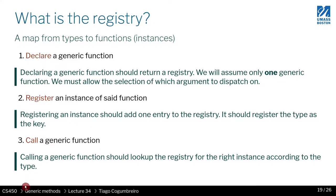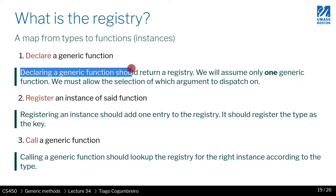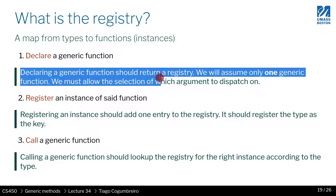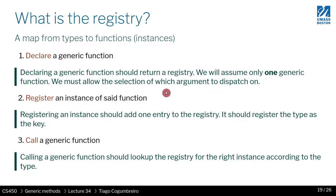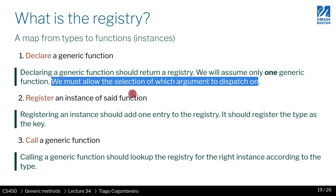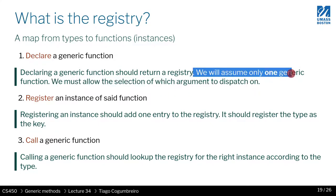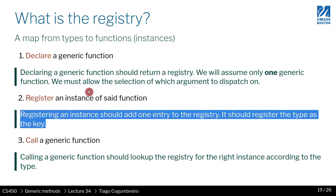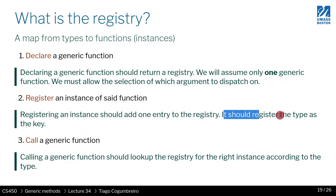So if we recap the three parts: on declaring, we have to say which parameter is being dispatched on. And we can just assume that there's only one generic function for the sake of simplicity. Additionally, we need to know which function is assigned to which type.